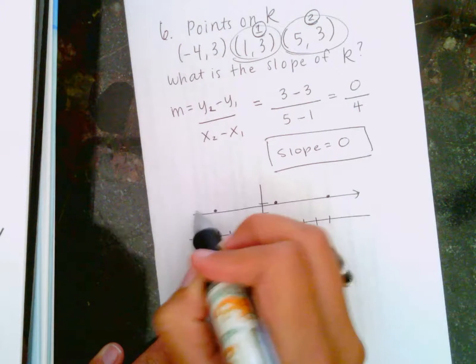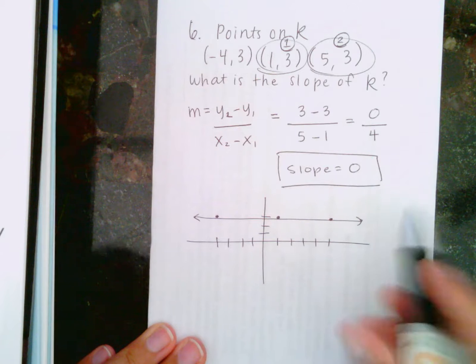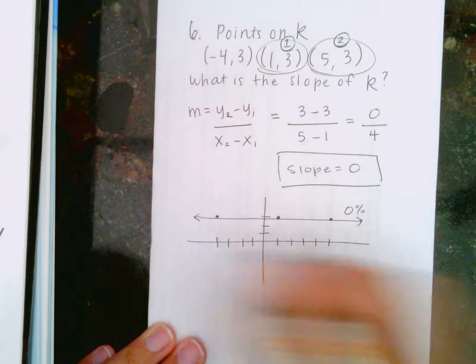Make the line out of that. Now, if you were on a treadmill and it was this level, what is the percent incline? 0%. There is 0 slope here.